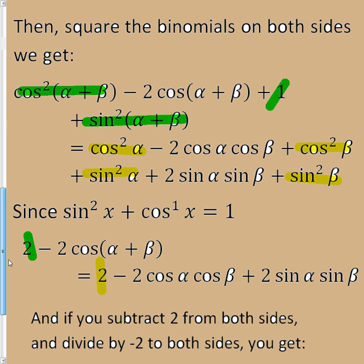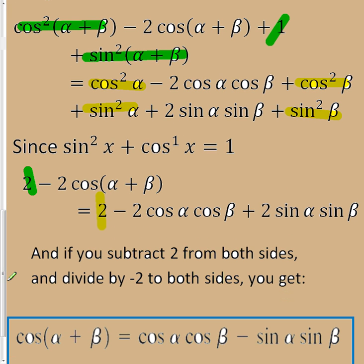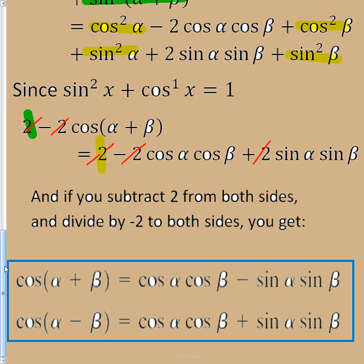So if I subtract 2 from both sides and divide by negative 2, what happens is that this 2 will cancel with this 2. And when I divide everything by negative 2, this negative 2 goes away, this negative 2 goes away, and this becomes a minus. I end up with cosine of alpha plus beta equals cosine alpha cosine beta minus sine alpha sine beta.